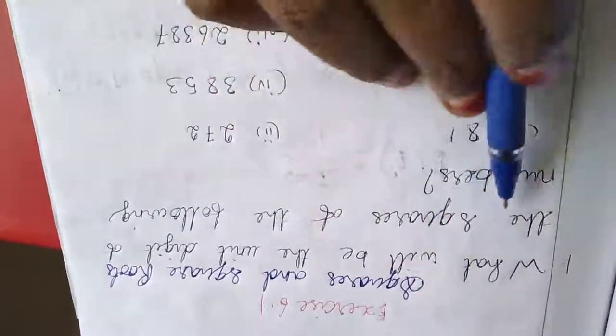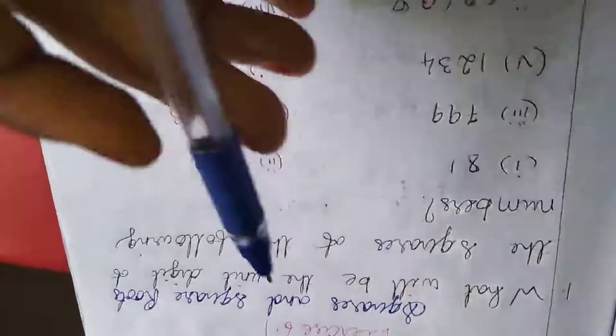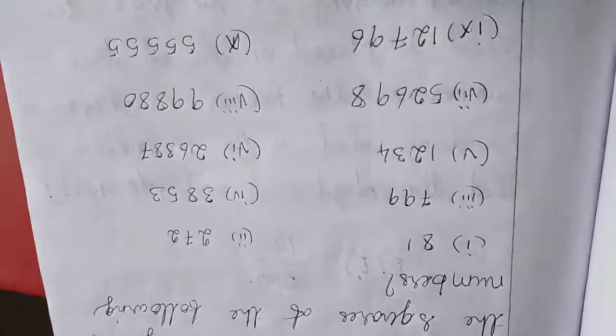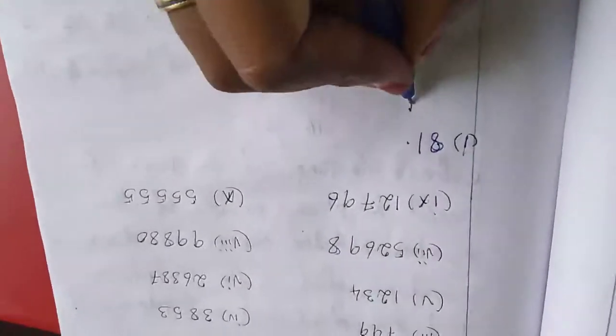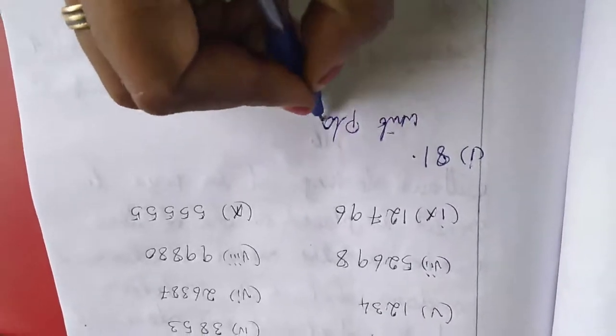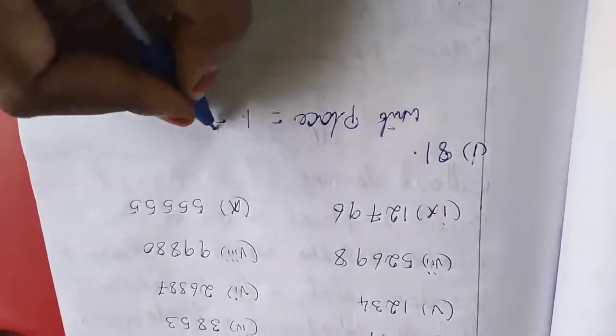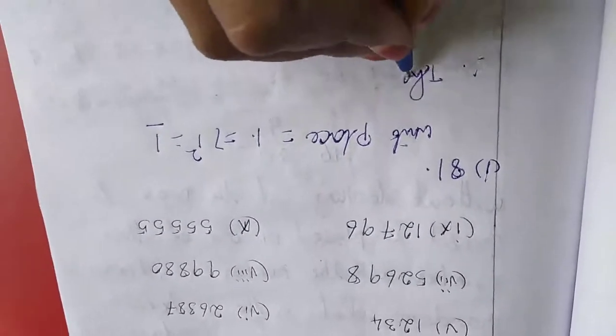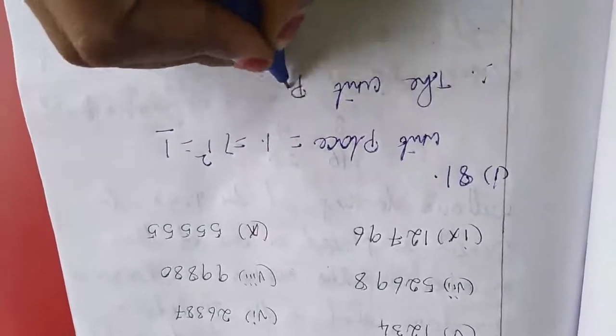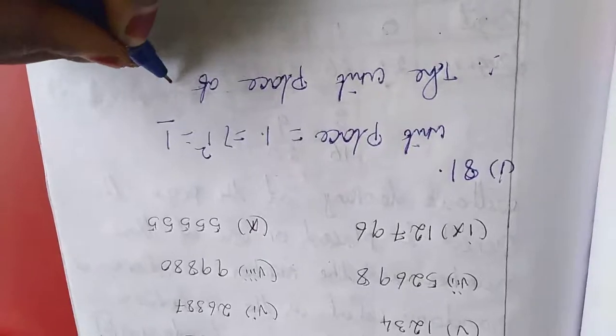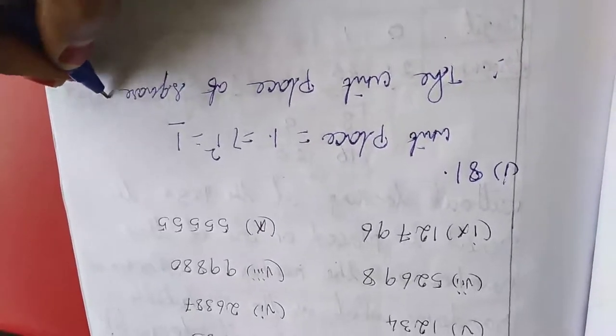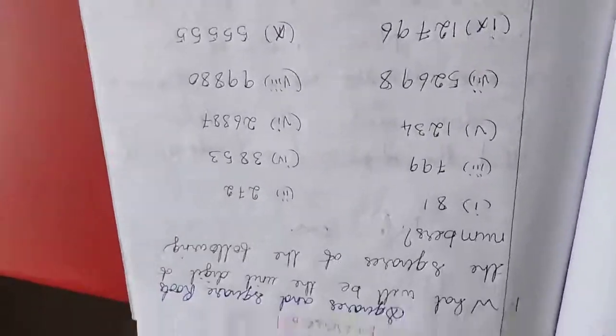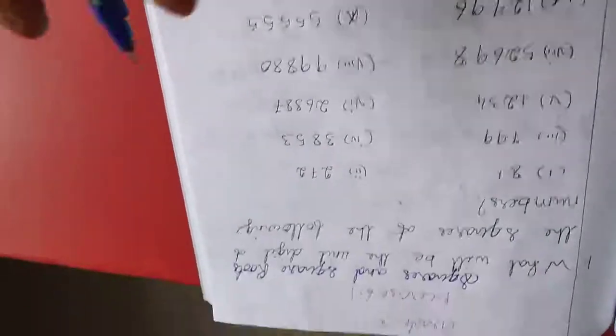What will be the unit digit of the square of the following numbers? First I take first number is 81, so unit place is what? Unit place is equal to 1, so which implies 1 square is equal to 1. Therefore, the unit place of square of 81 is 1. This line is very important, this line you want to write.